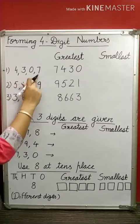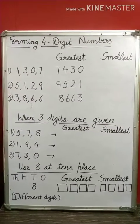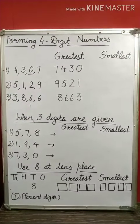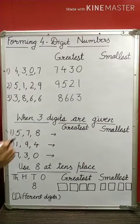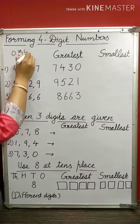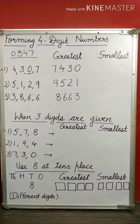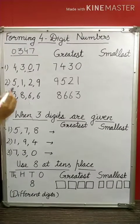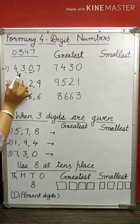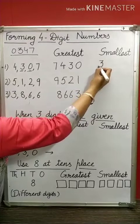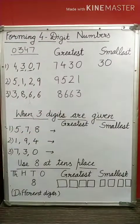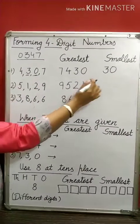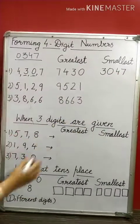We are given the digits 4, 3, 0, 7. Which digit is the smallest here? 0. But we cannot start a 4-digit number with 0. If I write 0, 3, 4, 7 — this is not considered a 4-digit number; it is considered a 3-digit number. So I cannot start a number with 0. That means I need to take another digit. The next smaller number is 3, so I will start my number with 3, then write 0. So 3, 0, 4, 7 is the smallest 4-digit number.